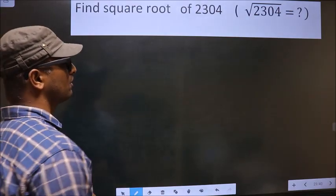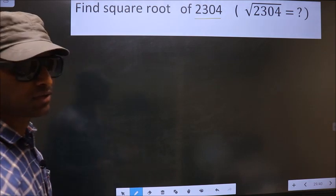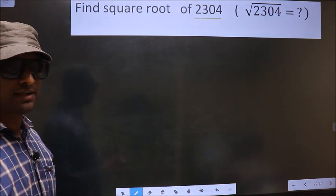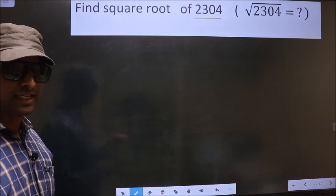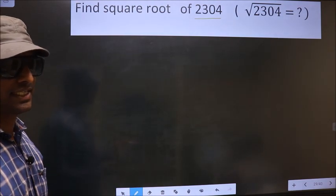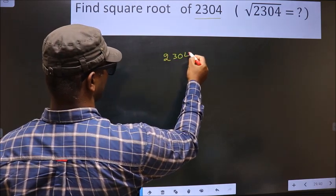Find square root of 2304. To find the square root by long division method, first we have to frame it in this way. See, that is 2304.